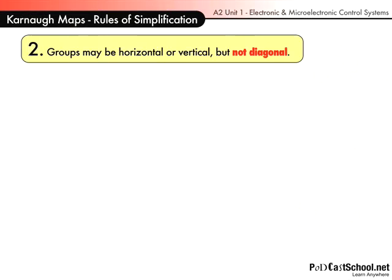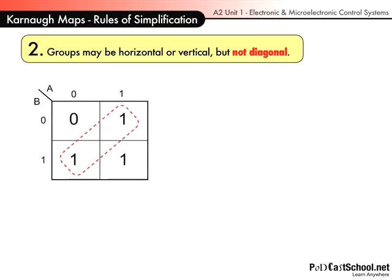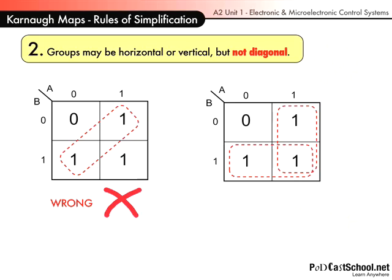Rule number two is that you cannot group diagonal lines. So that's obviously wrong. But what you can do is have two groupings, like an L in the mirror. So you can do that type of thing.